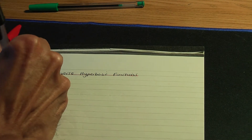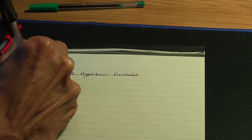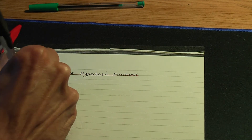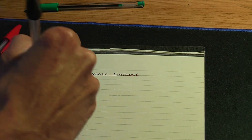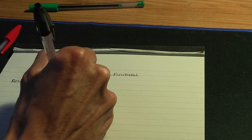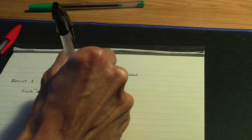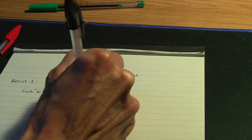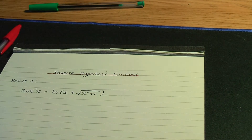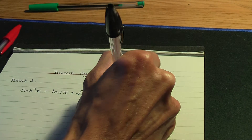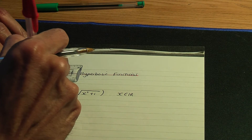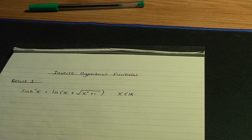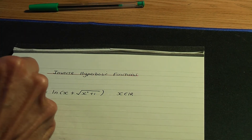So this is the first result, result number one. Let me prove to you that the inverse hyperbolic sine function has the definition ln of x plus the square root of x squared plus one. That result is true for real values of x. Let me underline that and show you the proof.